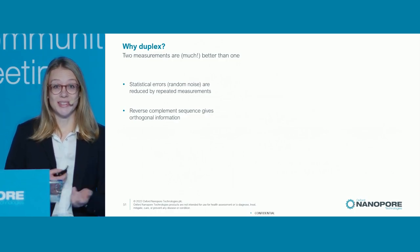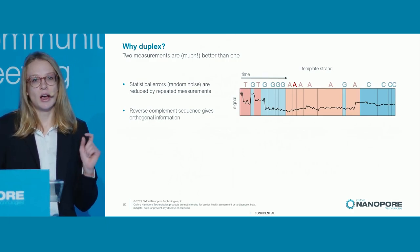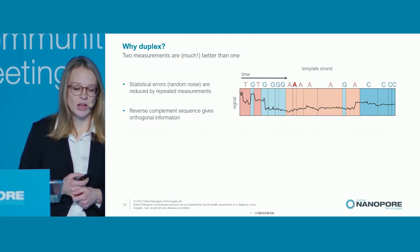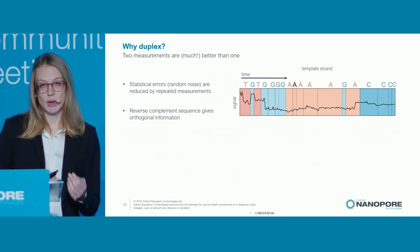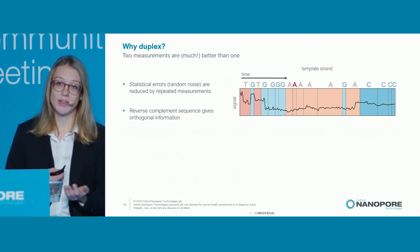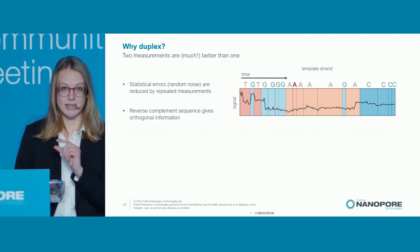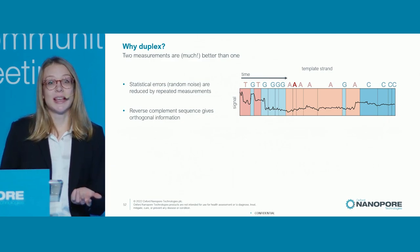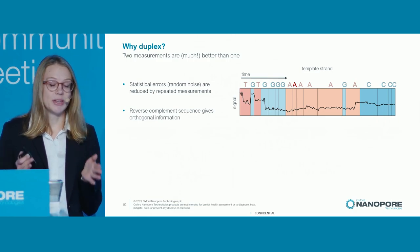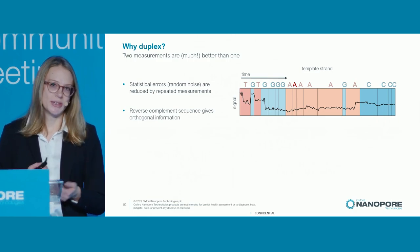Let's take a brief look at this in some real data. Here I'm showing a small snippet of a signal squiggle in the thick black line. This is a template strand, so I'm showing time going from left to right. I'm also showing the output of the base caller — the bases annotated above, as well as the segmentation information. Those thin vertical lines divide up the bits of signal that correspond to each base according to the base caller.